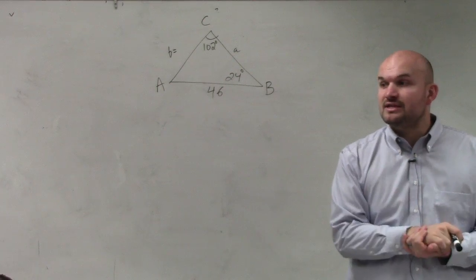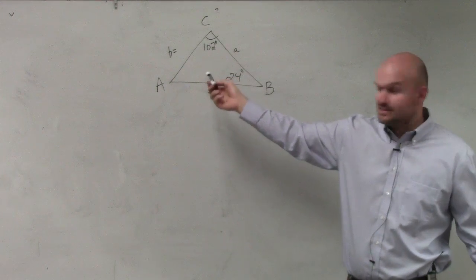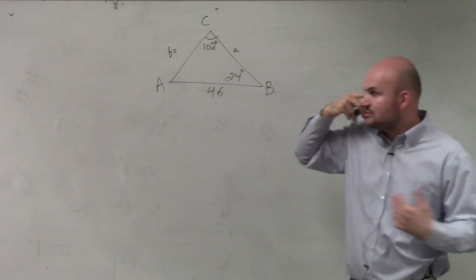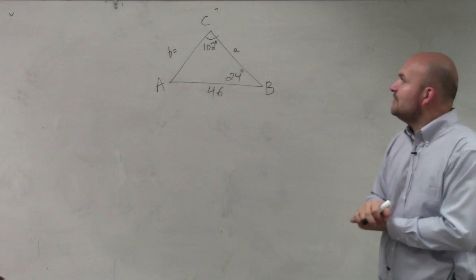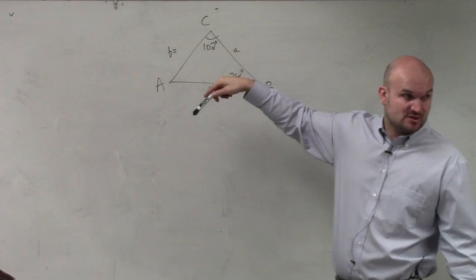Now, we can go ahead and solve for B by using our law of sines. And with law of sines, basically we can use law of sines whenever we have a ratio of an angle and its opposing side length.